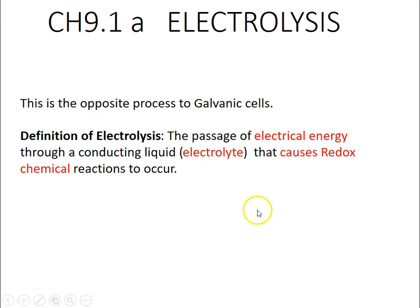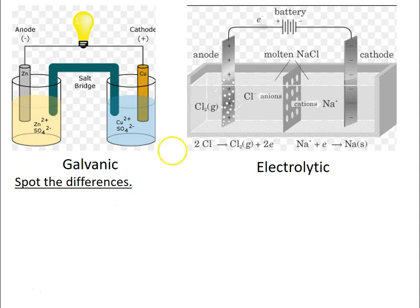This is an overview of electrolysis and a comparison between it and galvanic cells — the process is opposite. Electrolysis is when you pass electrical energy through a conducting electrolyte, and those electrons that are being added or removed will cause redox chemical reactions to occur. You need to be able to look at a setup and work out whether it's undergoing a galvanic process, which is spontaneous, or an electrolytic process where electrical energy is supplied.